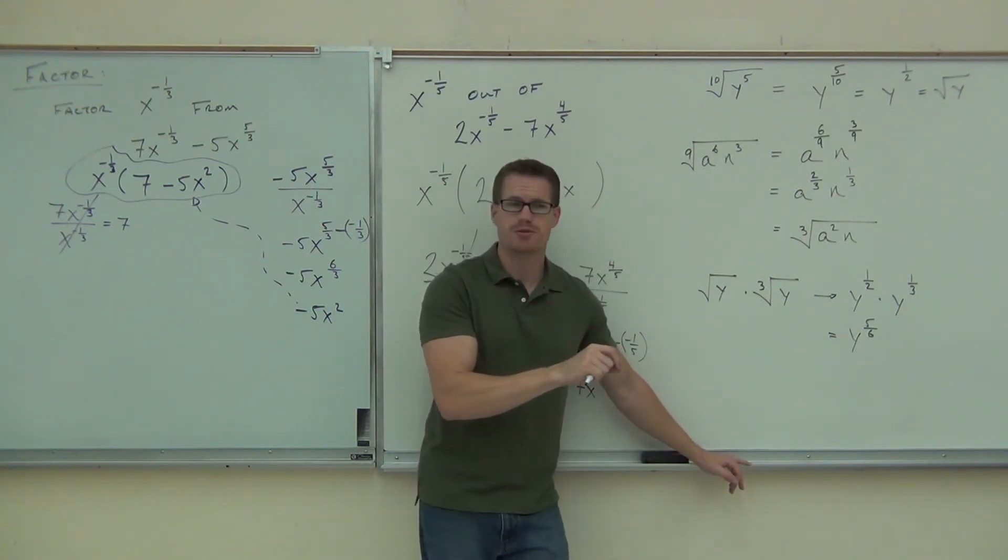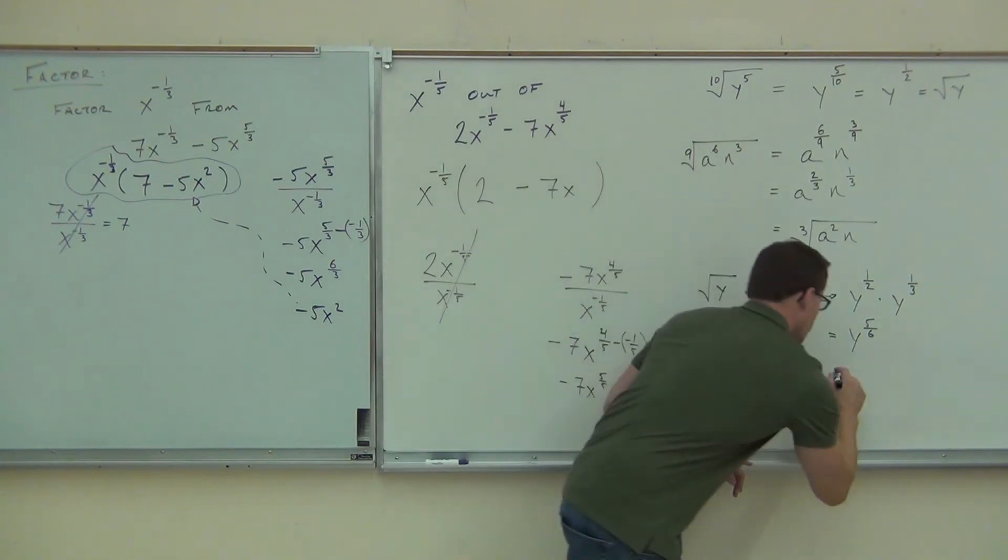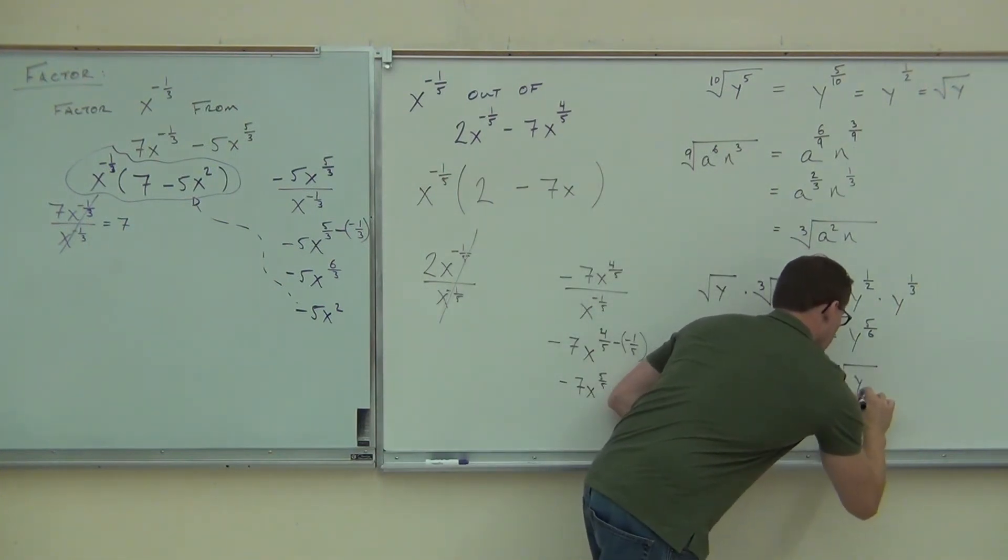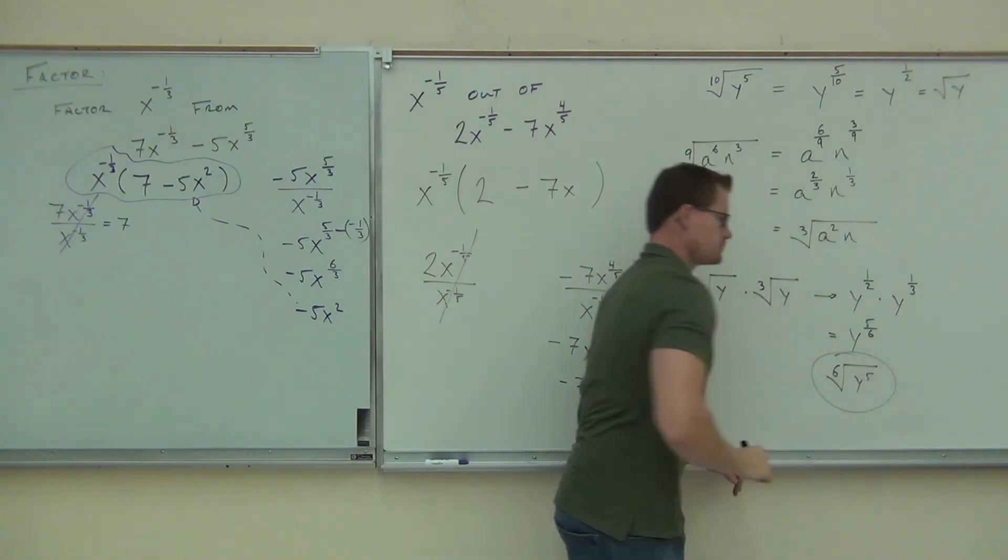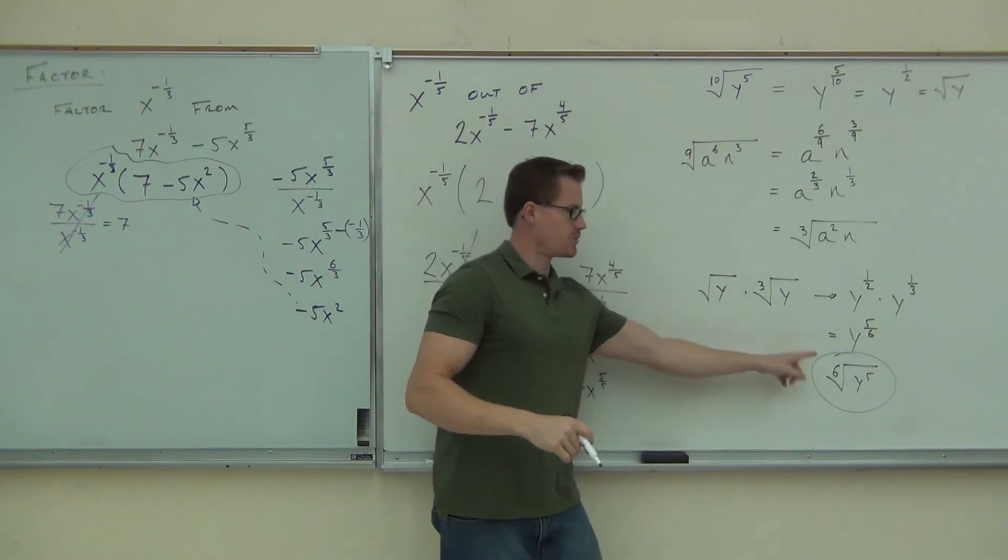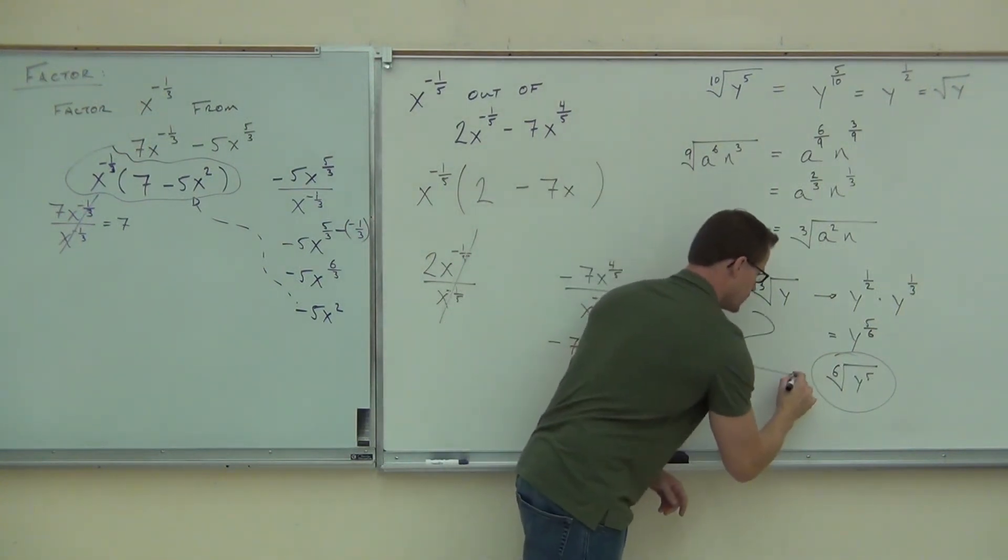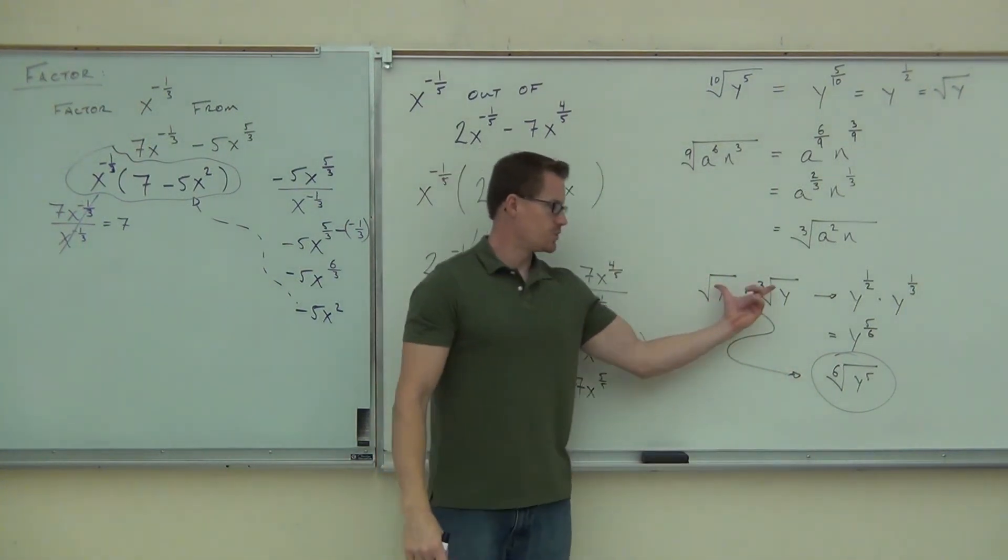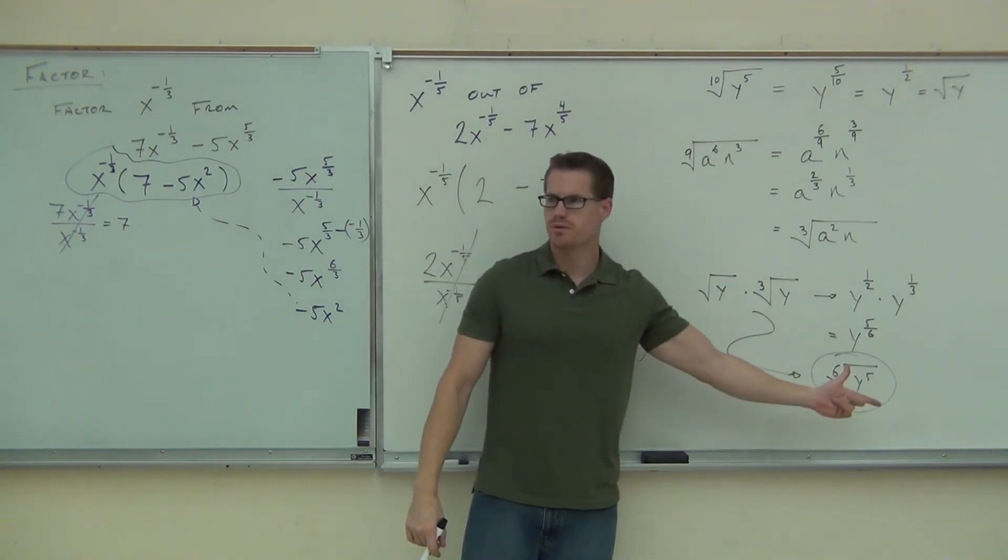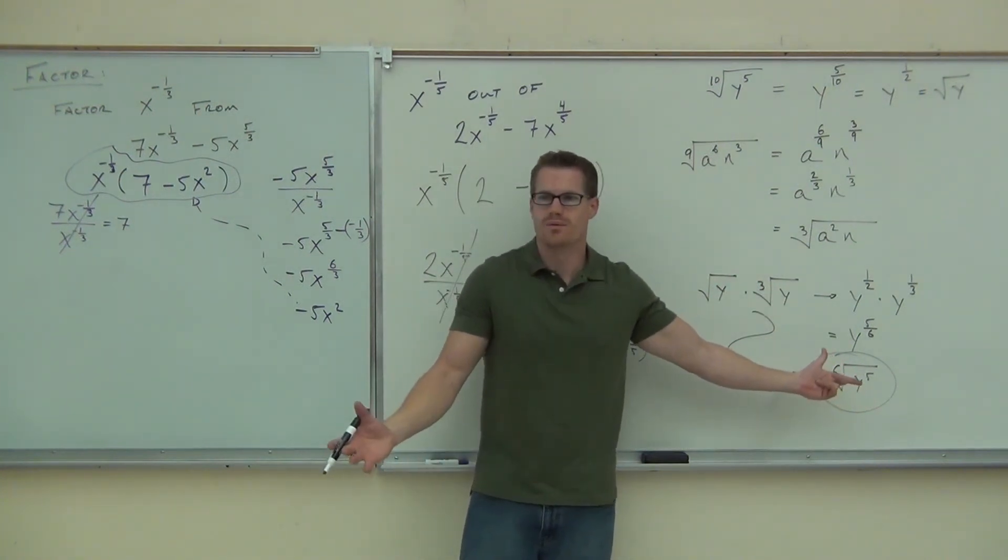Can you take y to the five sixths and write it back as a root? What type of root do I have? A fifth root or a sixth root? Sixth root. Here's what this says. This equals that. You can take two roots and make it into one root.